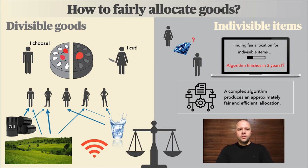If you ever have to share a cake with a sibling or a friend, you know one process for fair allocation. For example, your sister would take the cake, cut it in two equal halves in her eyes, and then you would choose your favorite piece. You are happy because you got your favorite piece, and your sister is happy because for her both parts are equally worth.